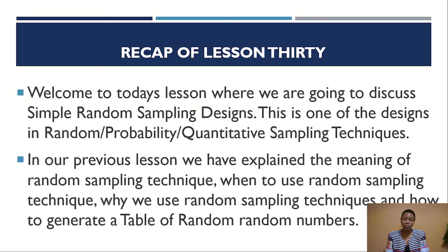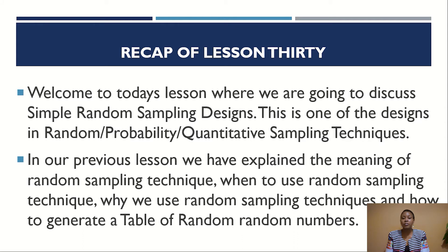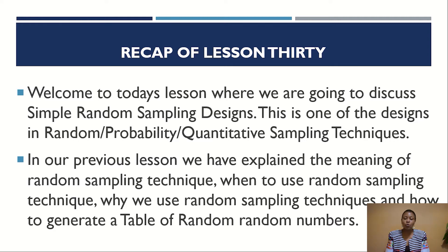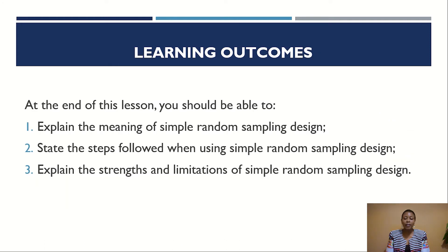That is why we use the word probability, meaning every person is given the chance to be part of the sample and the selection is random, hence the use of the word random. We have also discussed when we use random sampling, why we use random sampling techniques, and how to generate a table of random numbers using the internet. Note that we have talked about generation of random numbers because you cannot select a sample using this design without the use of random numbers.